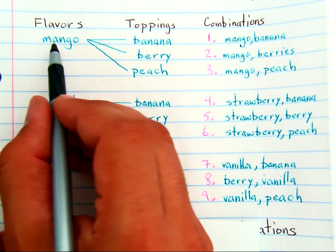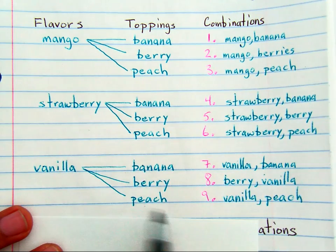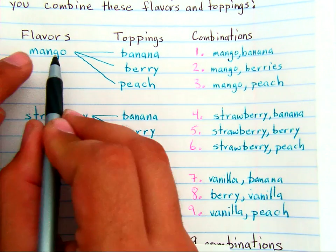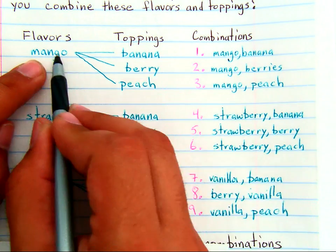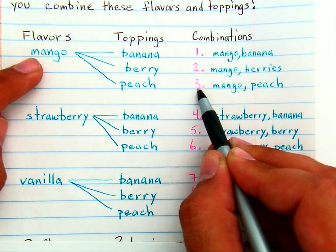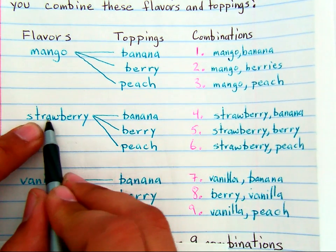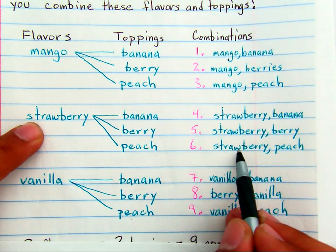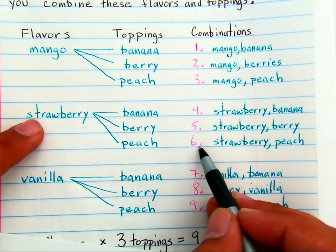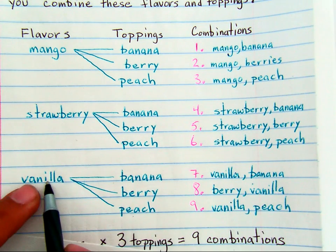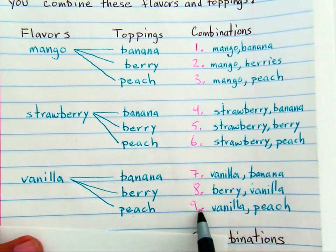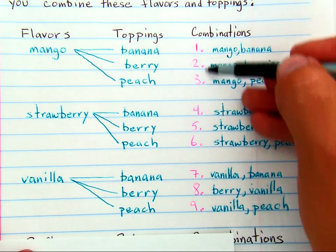For some people, this is a much easier strategy to see all of the different ways to combine them. You can have mango and banana, mango and berry, mango and peach — that's three different combinations. If you change the flavor to strawberry, you can have strawberry and banana, strawberry and berry, strawberry and peach — that's three more combinations for a total of six. But there's a third flavor, and combining that flavor with any of the three toppings gives you another three combinations, for a total of nine combinations.